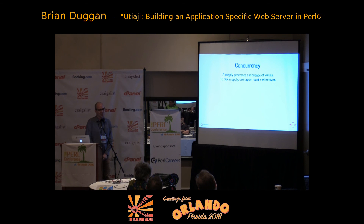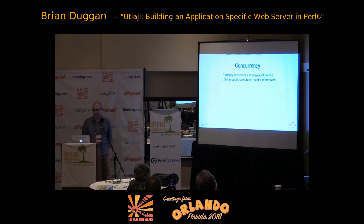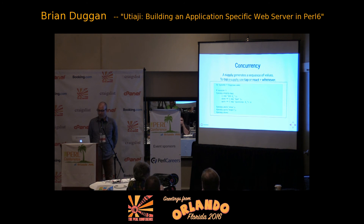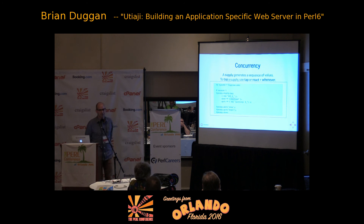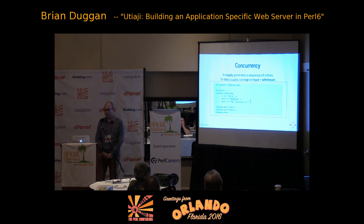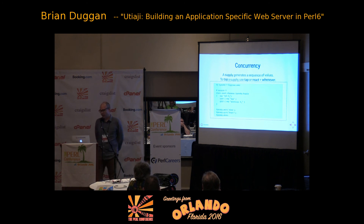Concurrency is very useful when you have a web application. The big concept here is supplies. A supply generates a sequence of values and you can either use tap or use react-whenever when dealing with a supply. Here's an example of a supplier: $Gatsby is a supplier, and you can call $Gatsby.supply.tap to set up a tap, then pass it arguments — the first is the block of what happens when things come in, and then you have things that happen when the supply is empty with done, or if it gets interrupted with quit. An equivalent way is to use the react-whenever construct: you say start react whenever supply, here's your block, and then you have your last and your quit inside that block.